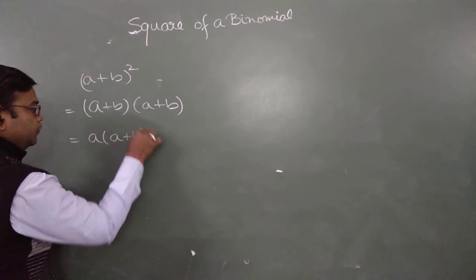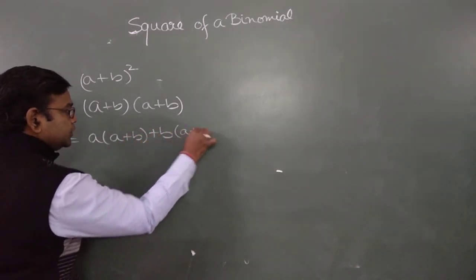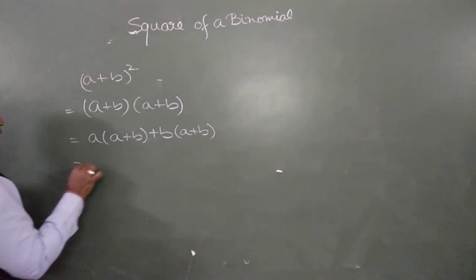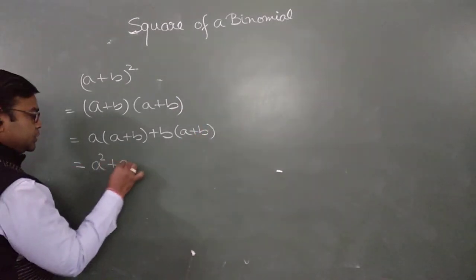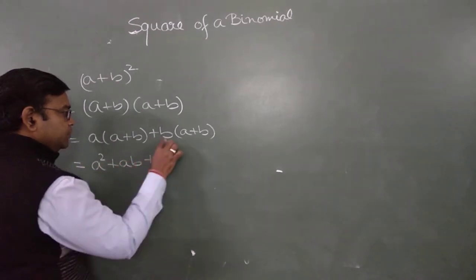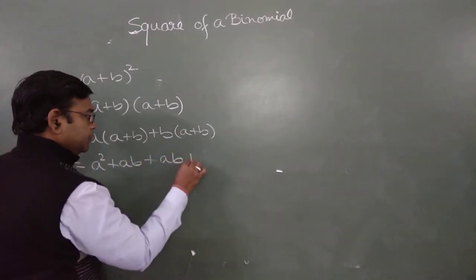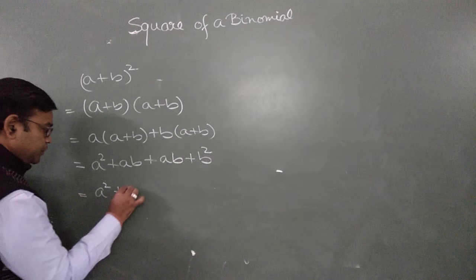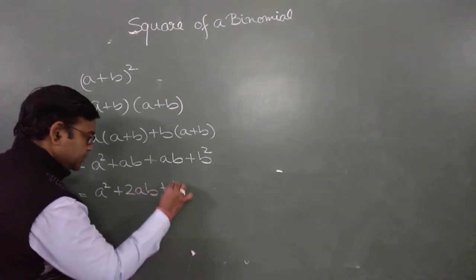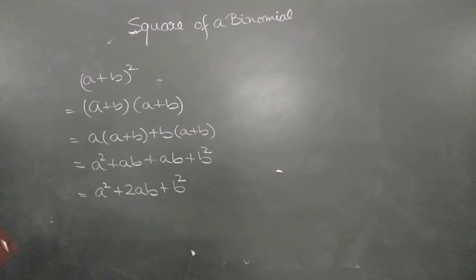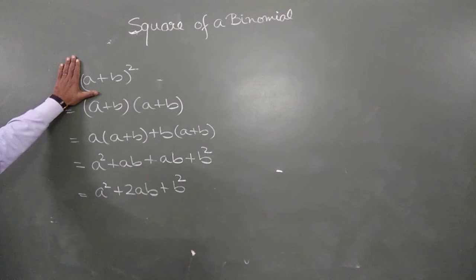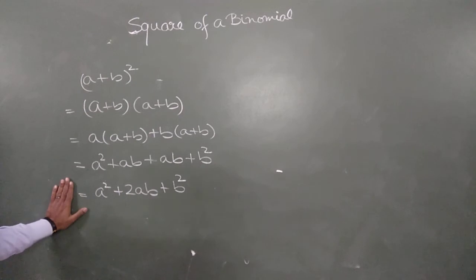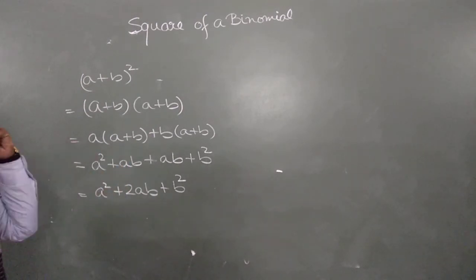When we find the product, we expand it: a times a is a squared, then a times b is ab, then b times a is ab, and b times b is b squared. So we get a squared plus 2ab plus b squared. This is known as the first identity — if we have the square of a binomial expression with a plus sign, we can find it using this formula.